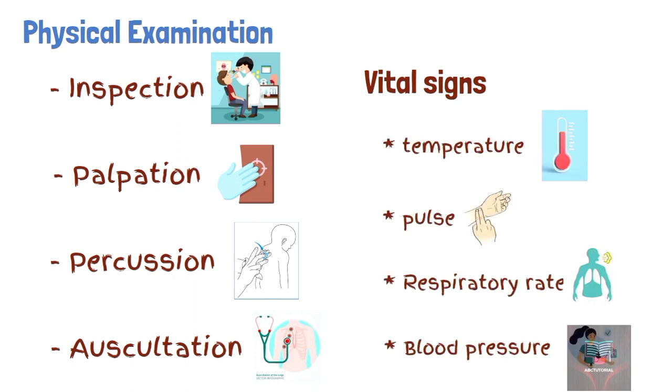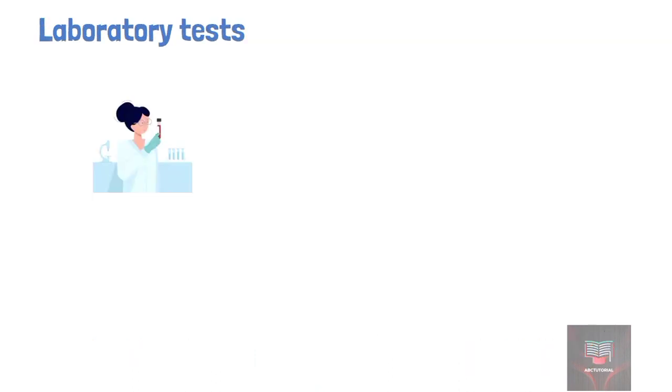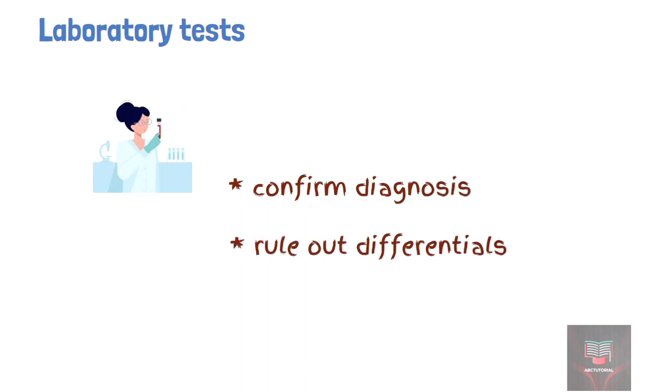Most times the diagnosis of the disease will be obvious or at least limited to possible differentials following the history and examination. However, laboratory tests are usually done to confirm the diagnosis and rule out other differentials.